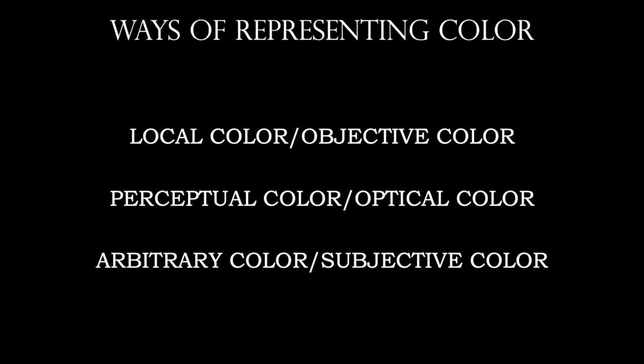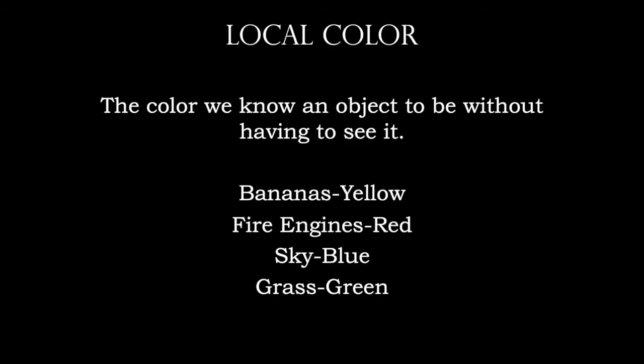There are three ways of representing color. The first is local color, also called objective color. This is the color we know an object to be without having to see it — bananas are yellow, fire engines are red, the sky is blue, grass is green. Throughout most of art history up until the 1860s, replicating the world as it is was the goal. Edward Hopper's painting uses local color: a blue sky, white clouds, and a green hillside filled with plants and shrubbery.